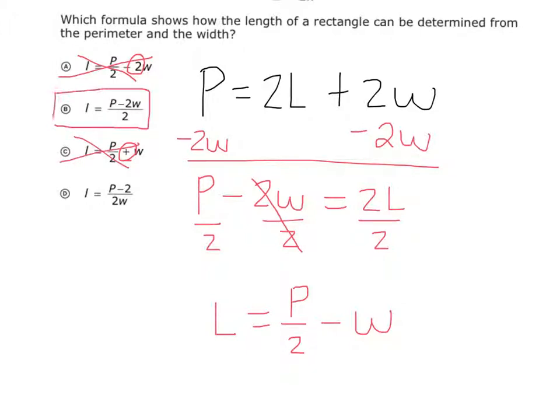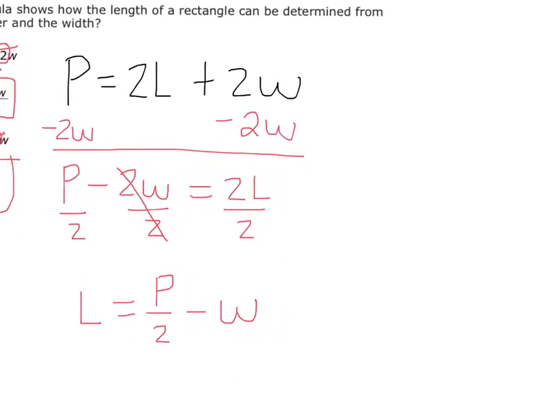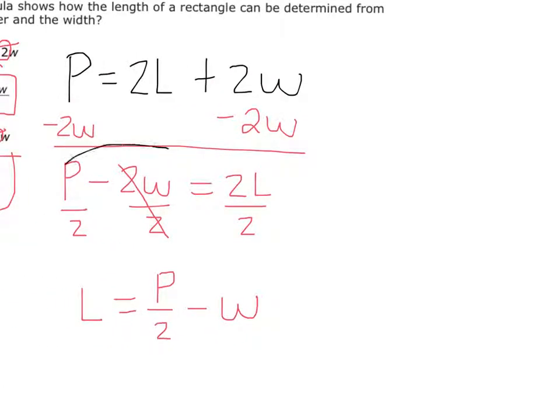Now, to get B or D, we've got to do our problem just a little different. So what I need you to do is I want you to write this step right here, and we're going to solve for L a little different. So I'm going to go back and I'm going to write P minus 2W equals 2L.